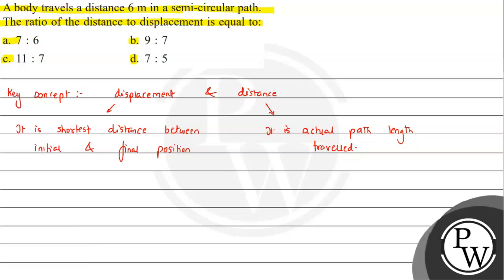Now to understand this question, we have a semicircular path given. And we're given that the body travels 6 meters in a semicircular path. If we talk about distance, let's say this is point A and this is point B.